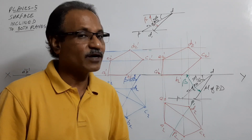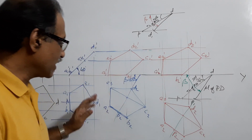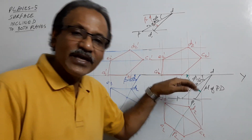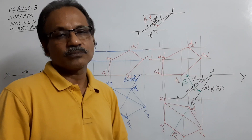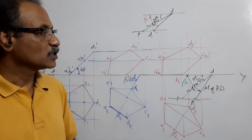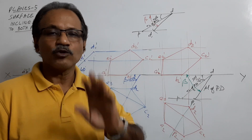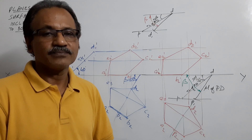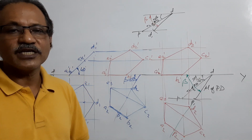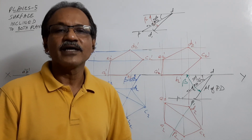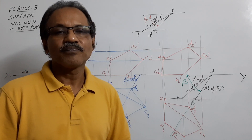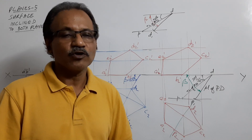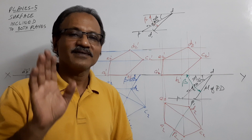We have discussed two problems: one where beta of diagonal PD is given, and one where phi of diagonal PD is given and you find beta to draw. This type of question can come for any lamina. If you are following along, please subscribe, like, and share among your friends. Thank you.